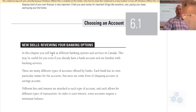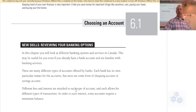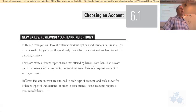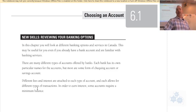We'll look at different banking options and services in Canada in this section. It'll be useful, even if you have a bank account, to be familiar with your banking services. There are different types of accounts at different banks. Each bank has its own particular names, but more often than not you'll see a checking account and a savings account — those are the two main ones. Different fees and interests are attached to each type, and each account allows for different types and numbers of transactions. Some accounts require a minimum balance to earn interest. If your balance drops below that minimum, you might owe extra fees, but if you keep enough in there, they may waive the fee.